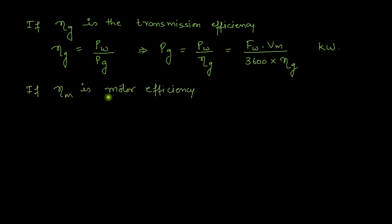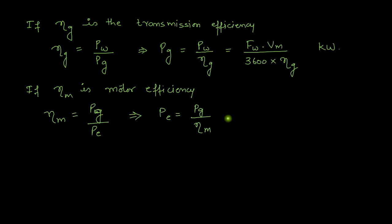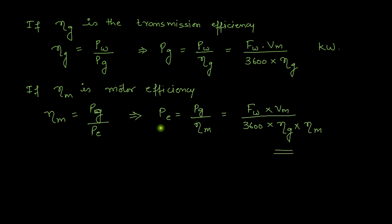If eta_M is the motor efficiency, then eta_M = Pg / Pe (motor output divided by motor input). This gives Pe = Pg / eta_M, and substituting the expression for Pg: Pe = Fw × Vm / (3600 × eta_G × eta_M). This is the required expression for the power consumed by the electric motor to convert electrical energy into mechanical energy. We will now solve a numerical based on this expression.